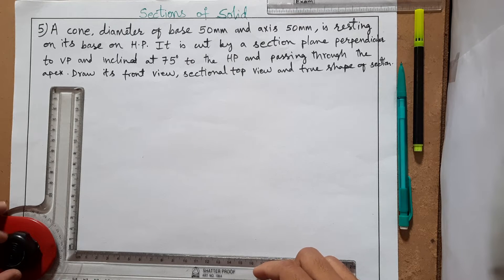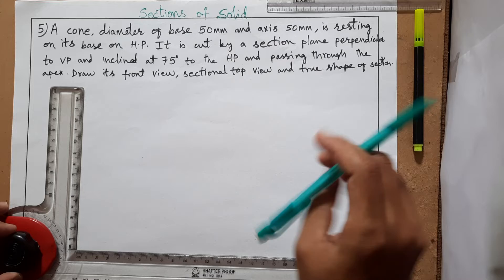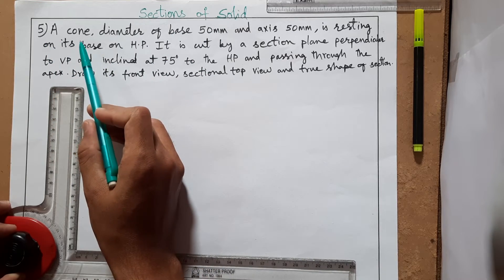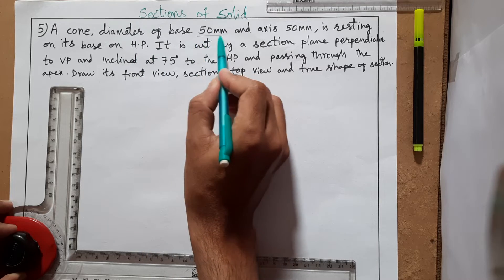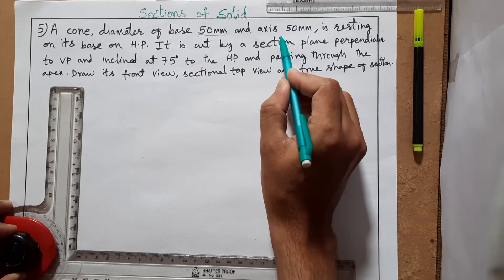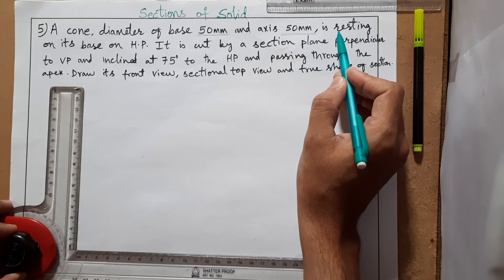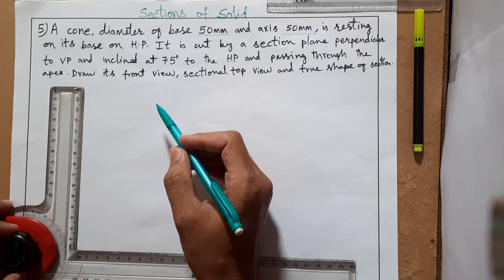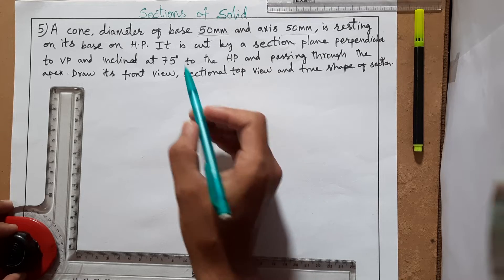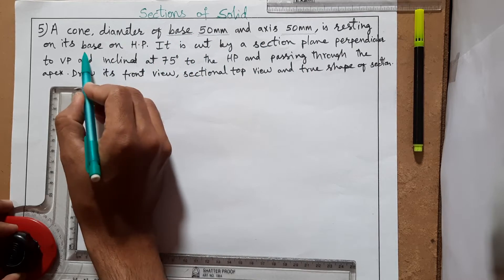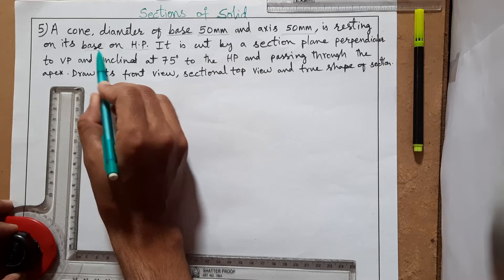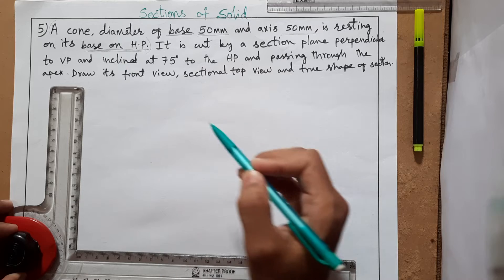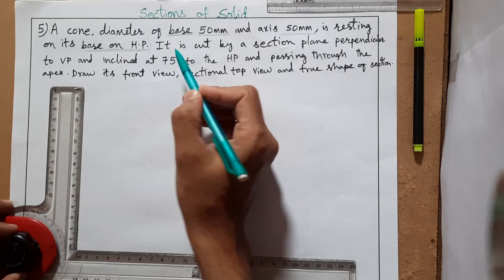Hello friends, welcome to my YouTube channel. In this video we will see sections of solids, problem number five. A cone of base diameter 50mm and axis 50mm is resting on its base on HP. Whenever a problem is given, you have to see how it is resting — here it is resting by its base on HP. This is very important.